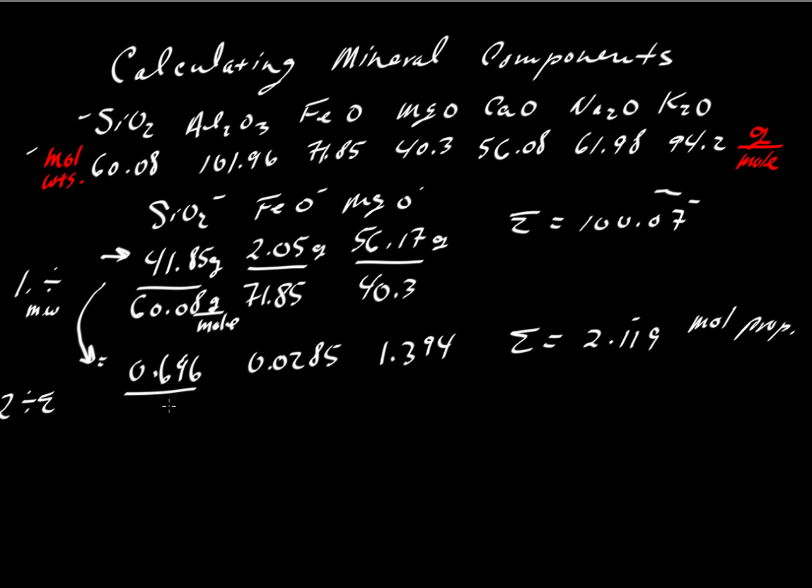So we'll take 696, divide that by 2.119, divide all of these by 2.119. This is referred to as renormalization. So we are renormalizing the total.